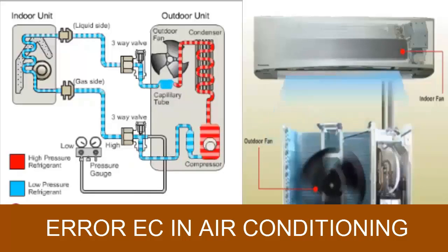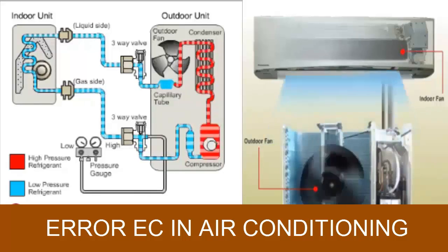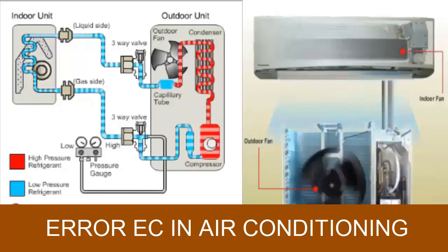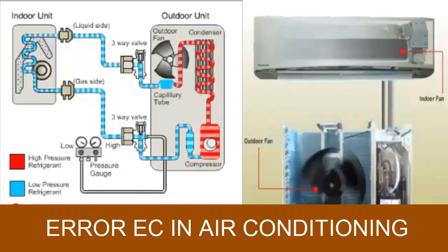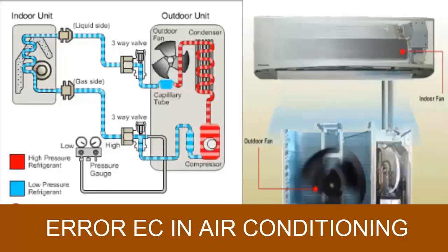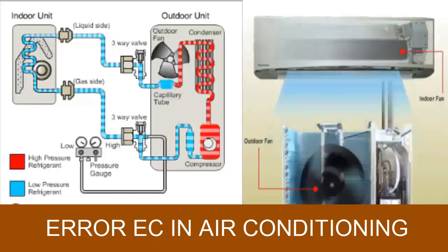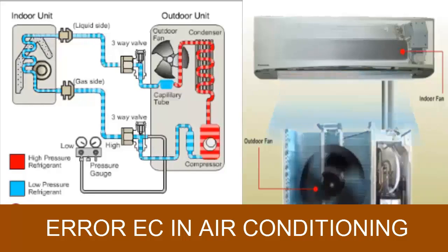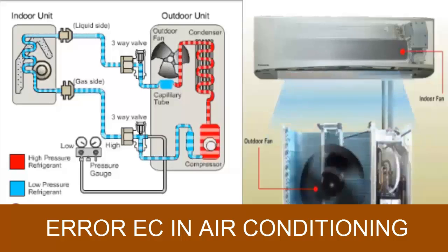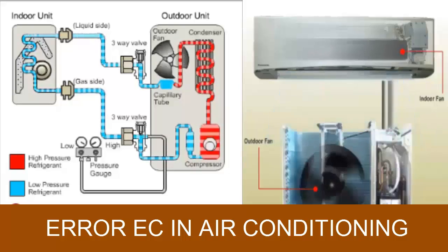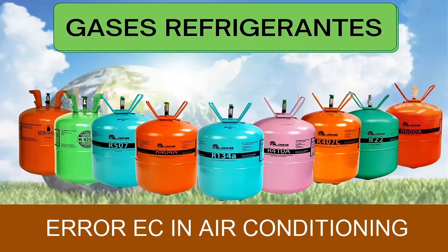Today we present: what does the error EC mean in air conditioning, and what should be done to correct it? The EC error code stands for refrigerant error and indicates that there is likely a refrigerant gas leak in the air conditioning unit.